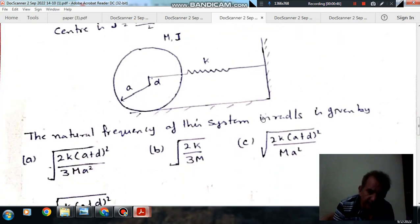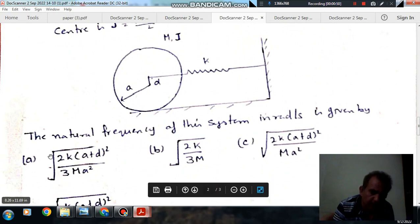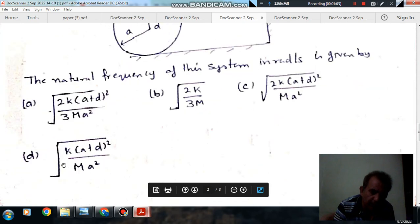The natural frequency of the system in radians per second is given by: Option A, root 2K(A+B)² divided by 3MA². Option B, root 2K by 3M. Option C, root 2K(A+D)² divided by MA². Option D, root K(A+D)² divided by MA².